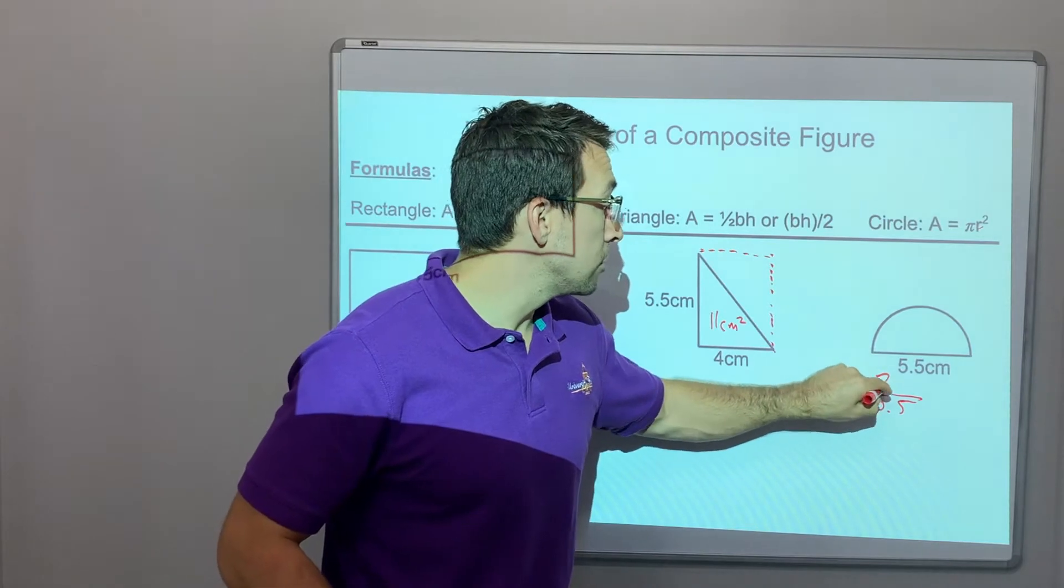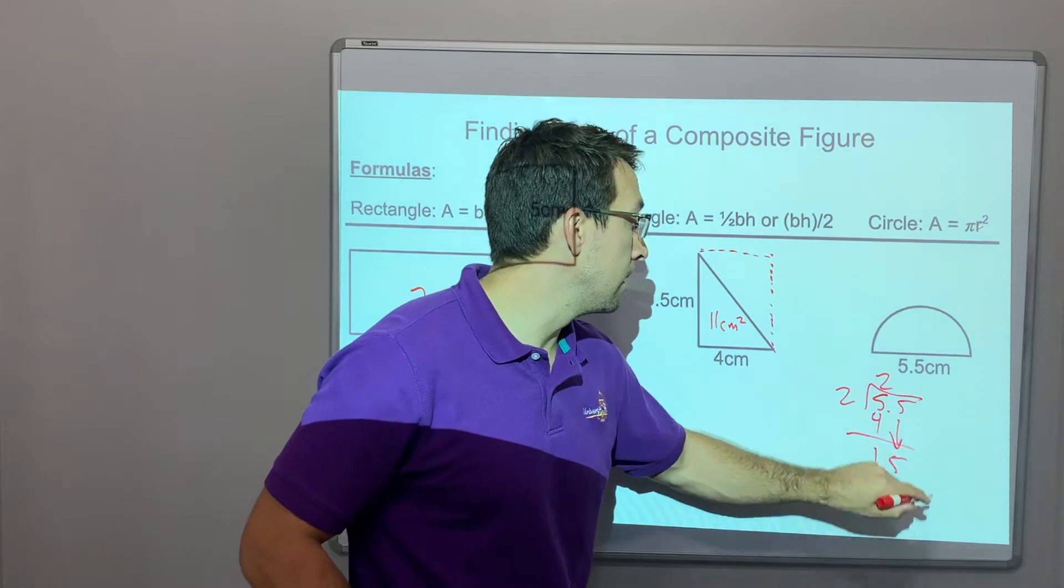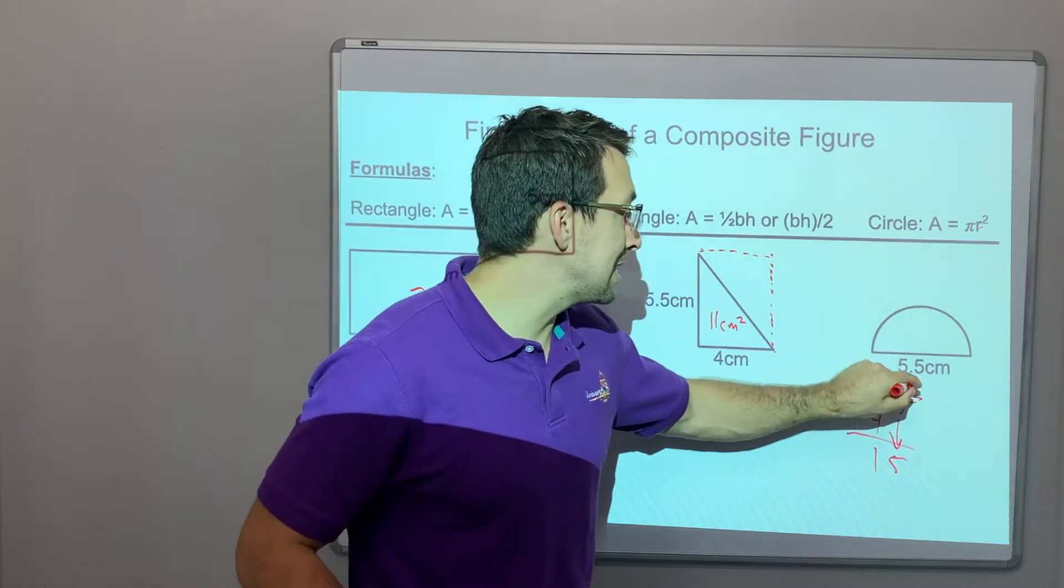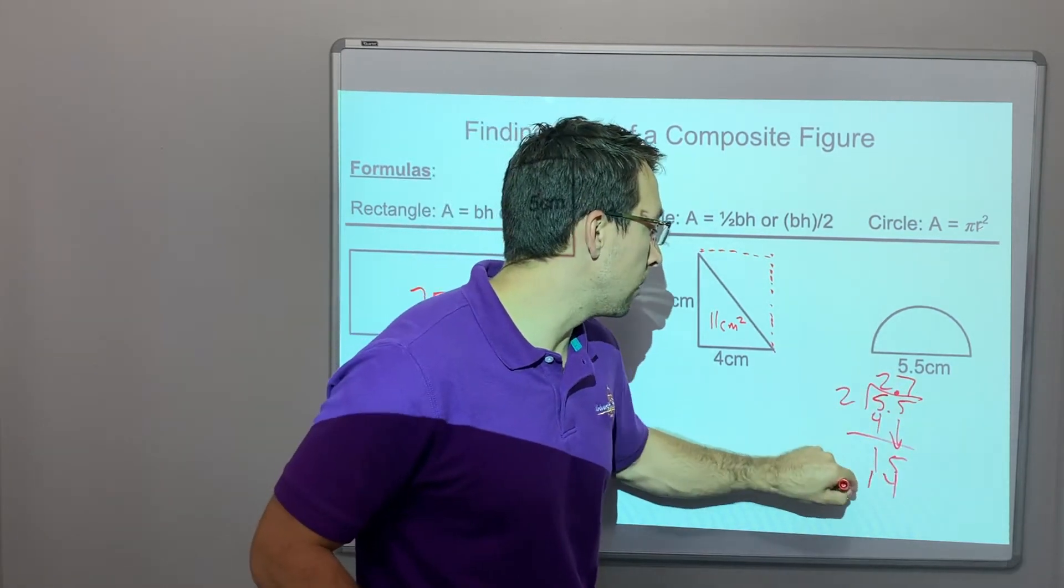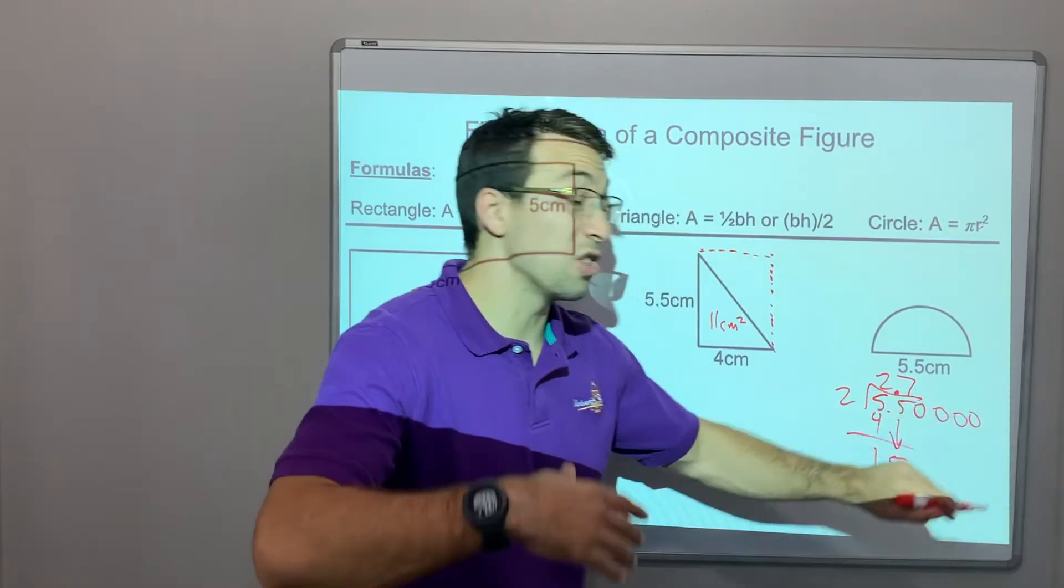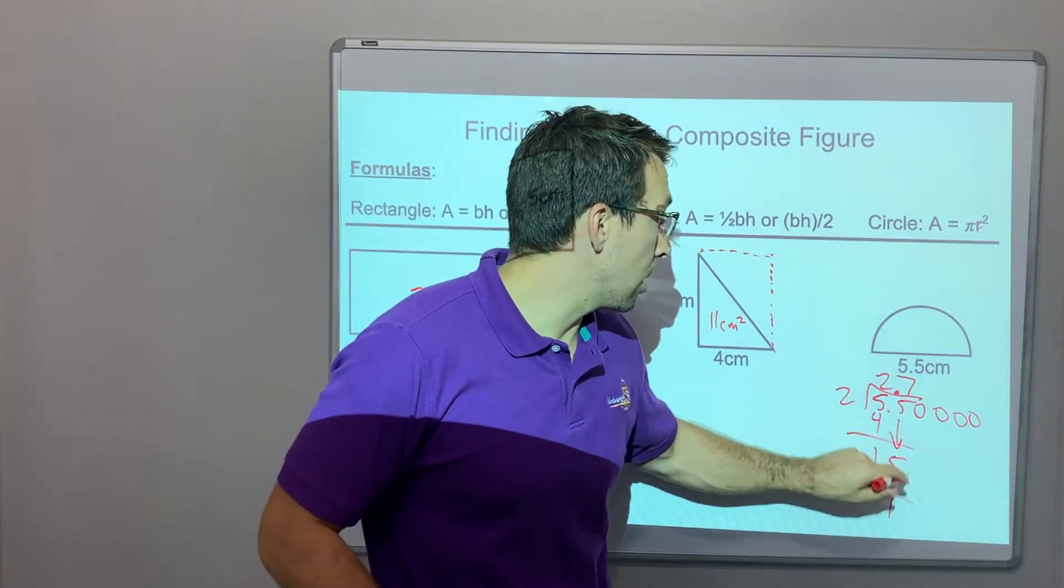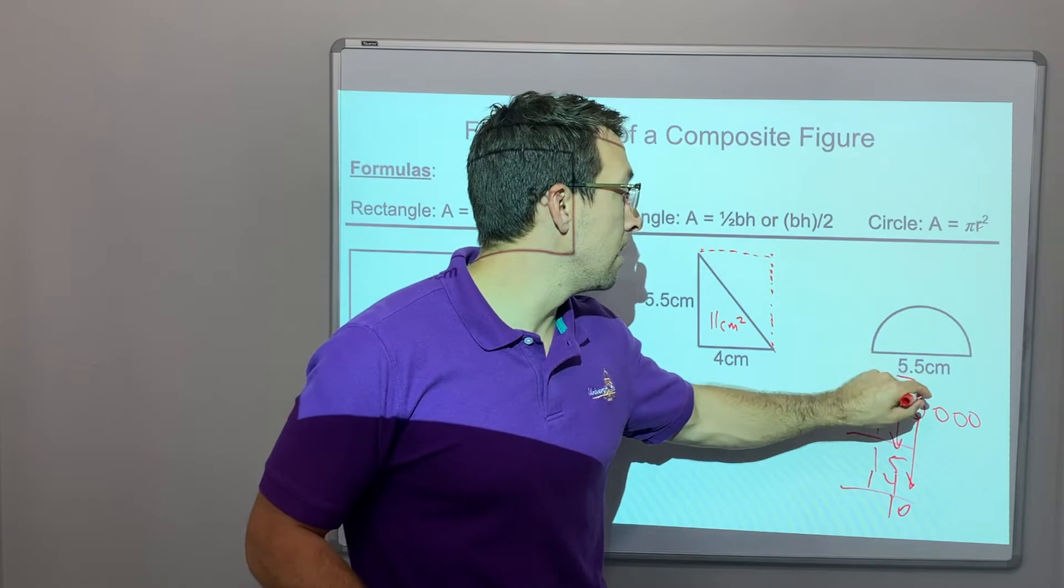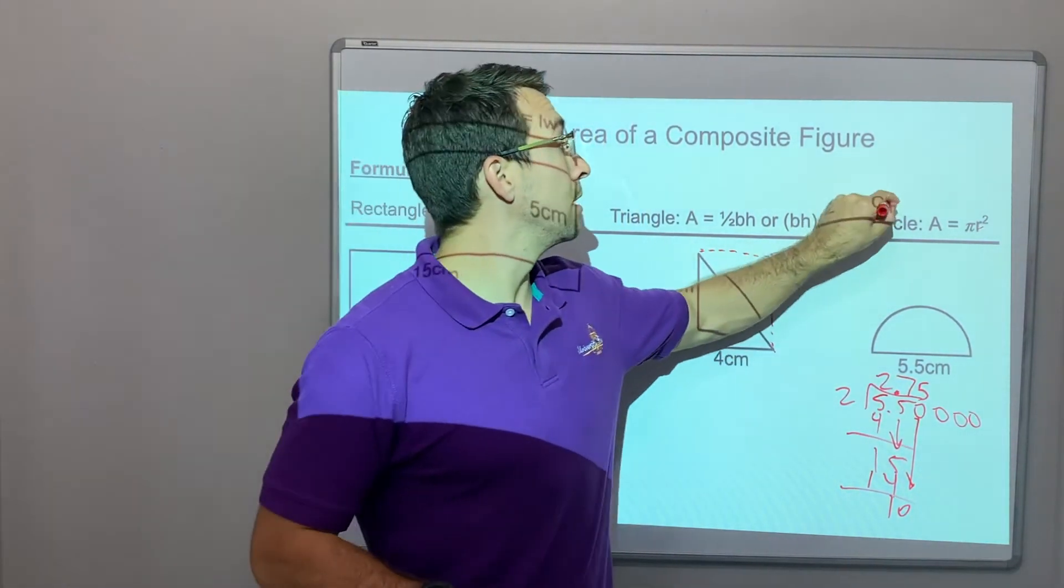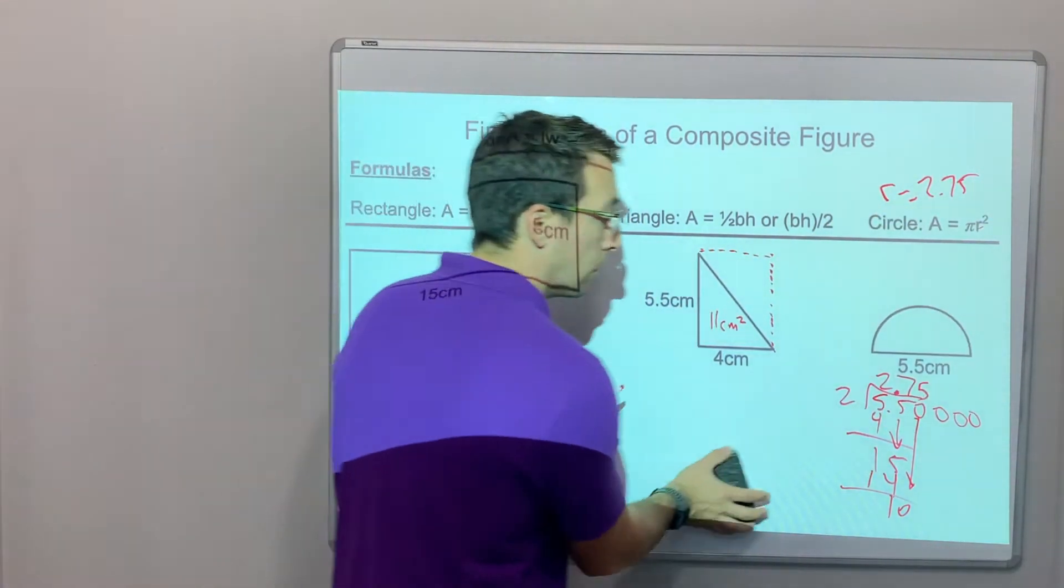2 goes into 5 two times. So 2 times 2 is 4. 1, drop the 5. We have a decimal in the dividend, so let's raise it to the quotient. 2 times 7 is 14. 15 minus 14 is 1. And then we can add zeros because it's to the right of a decimal. You can add as many zeros as you want to the right of a decimal. So we'll drop that zero. 2 goes into 10, 5 times. So our radius equals 2.75. Okay, we're good. We got that.